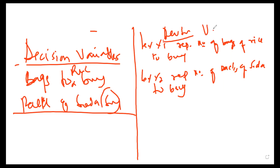Let x1 represent the number of bags of the item I intend to buy, and let x2 represent the next item. If there are more decision variables you can continue: let x3, x4, x5, x6 represent the number of additional items you want to buy. In that way, you have been able to define all your decision variables.